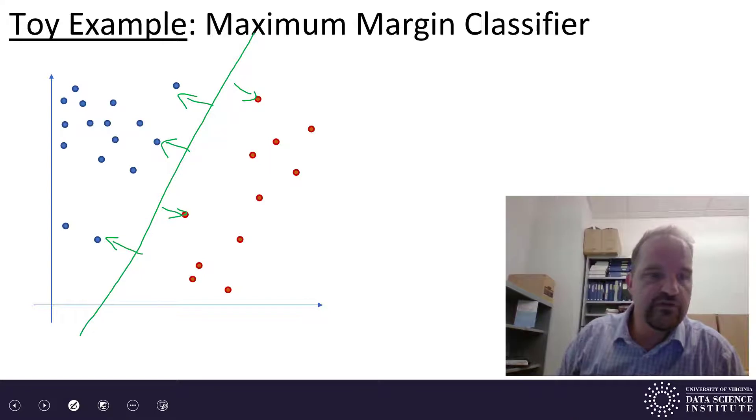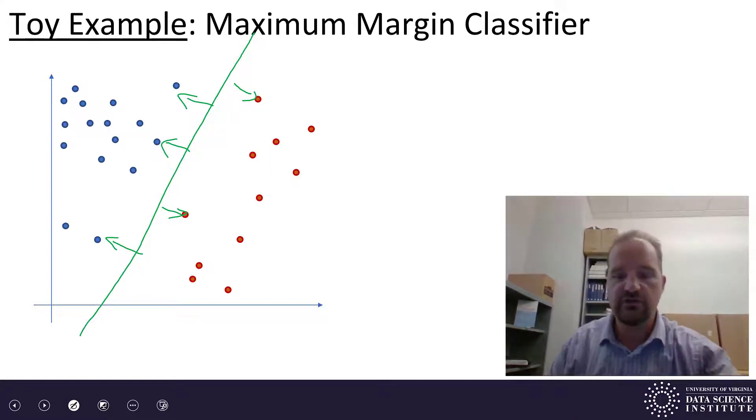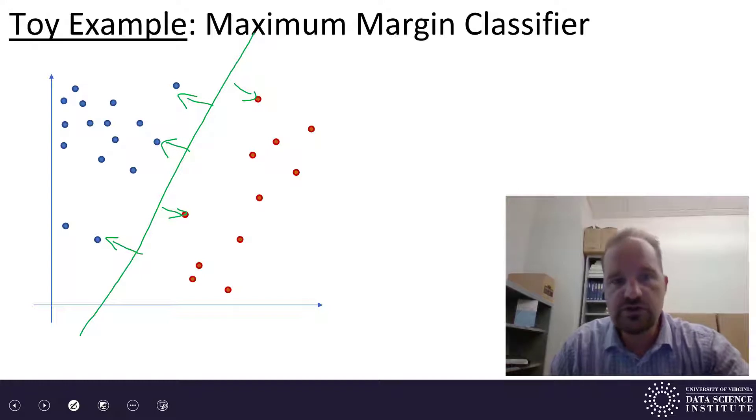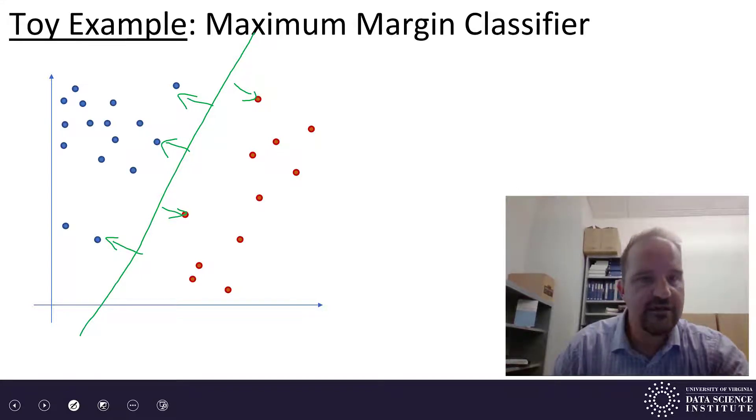That distance to those closest data points is called the margin. Think of it as like a margin for error. With some error in those data points or some noise and they moved around by some amount, that margin tells you how much error that could be without crossing the separation curve. And so that's the motivation behind the maximum margin classifier that we're going to talk about today.